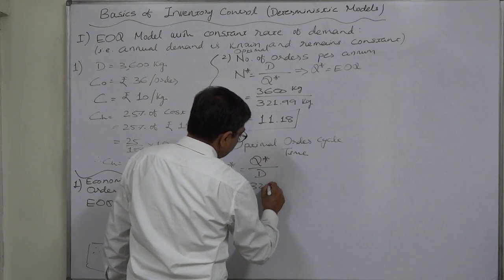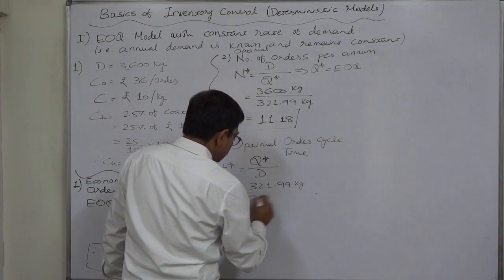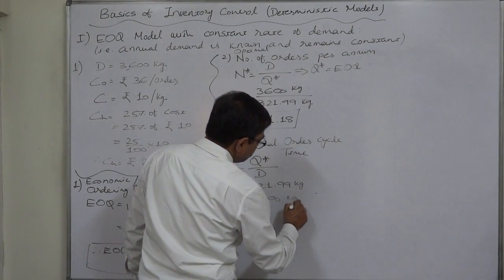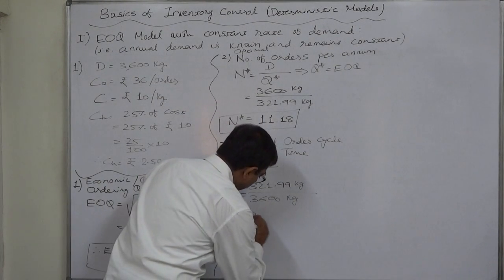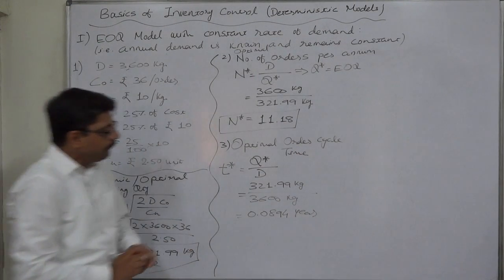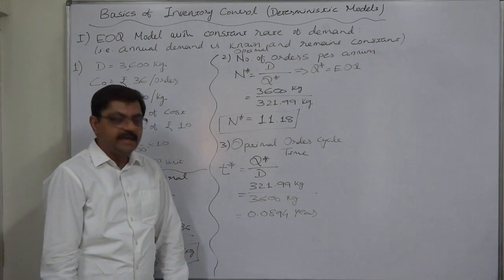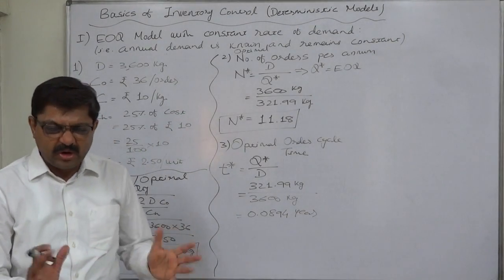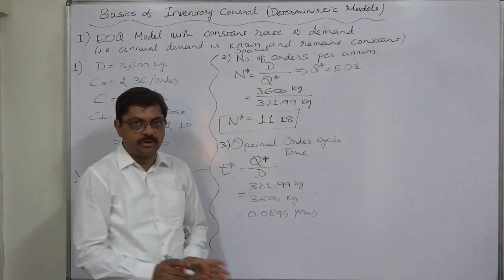Q star is 321.99 kg. D is 3600 kg. So, the answer comes to 0.0894 year. The gap between two consecutive orders is 0.0894 year. More or less, this is a useless answer. What is this 0.0894?